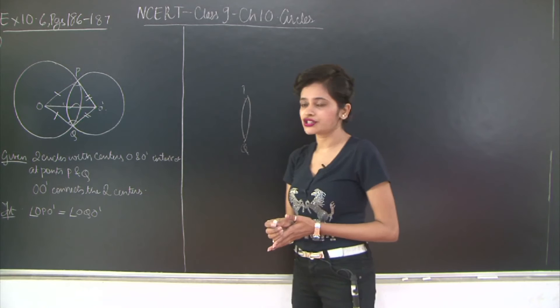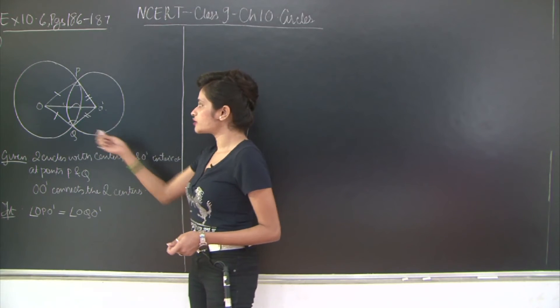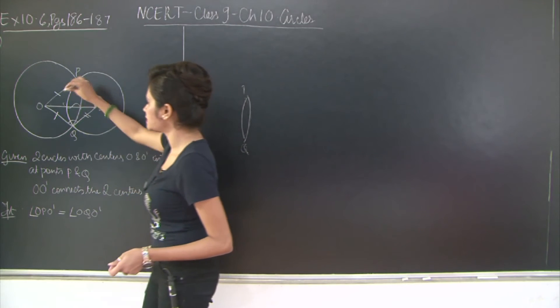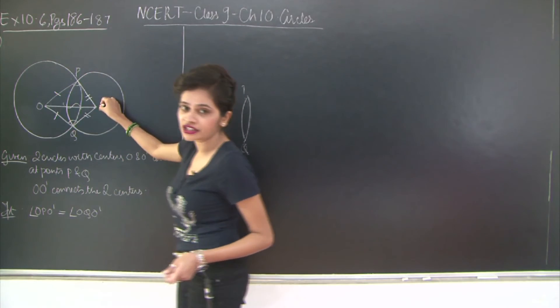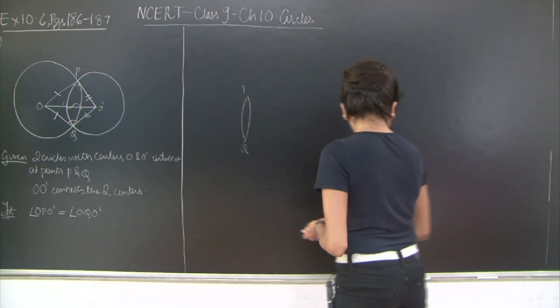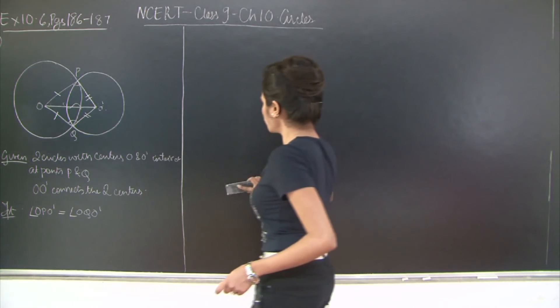Therefore the two triangles are congruent to each other by SSS test of congruence. Now once you prove the two triangles congruent you can simply say that angle O, P, O' is equal to angle O, Q, O' through CPCT or corresponding parts of congruent triangles. So let me erase this and we will go ahead with the proof.